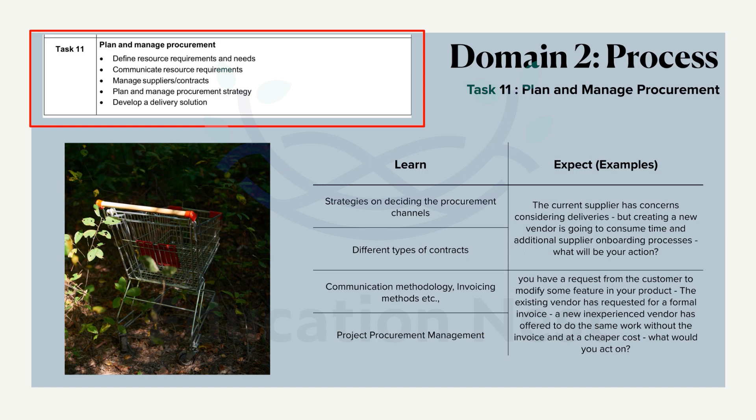We have to manage suppliers and supply contracts — suppliers have specific contracts, typically one- or two-year agreements, committing them to supply products for a stipulated time. We must plan and manage the procurement strategy: whether to import, source locally, or follow an alternate process for the product. All these options fall under the strategy component of procurement management.